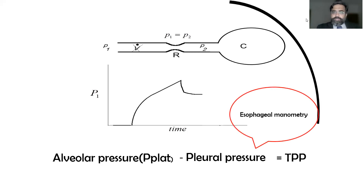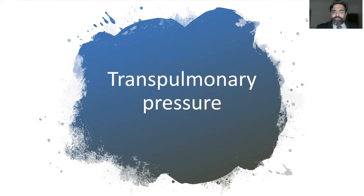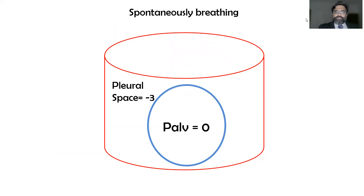The only way to measure pleural pressure is by esophageal manometry, because it is simply not appropriate to place a needle in the pleural space to measure pressure. That is what transpulmonary pressure monitoring is all about.